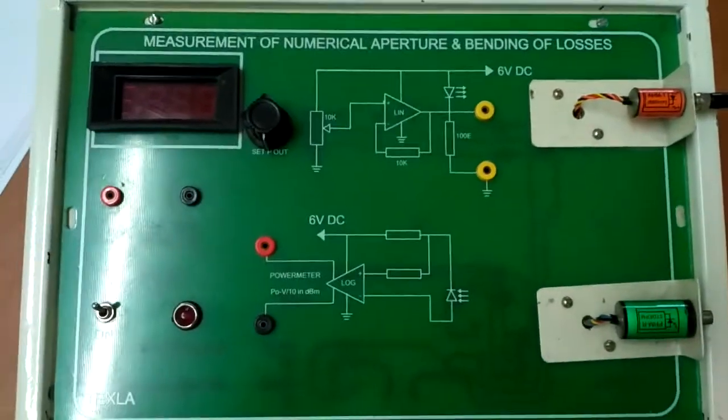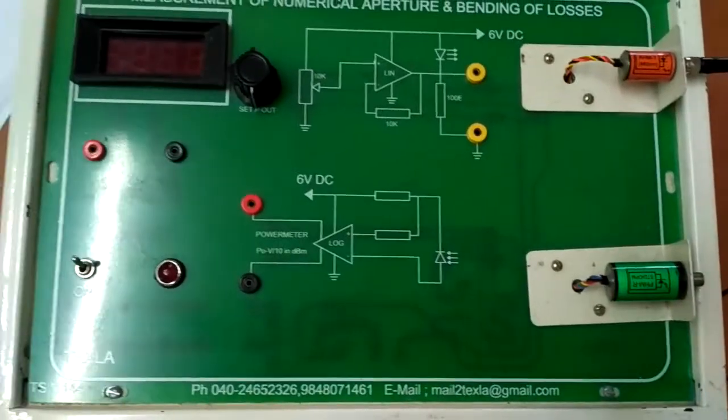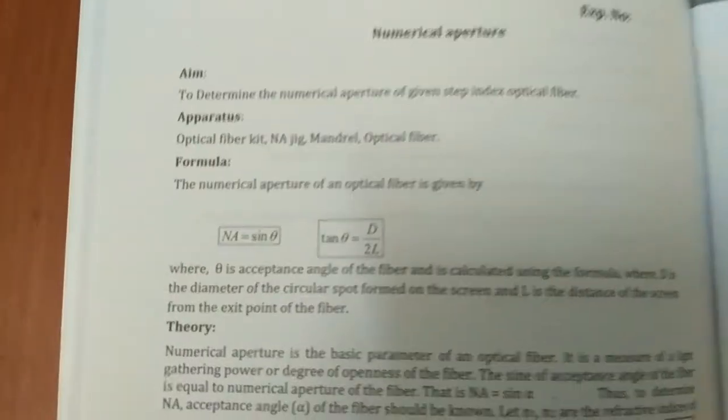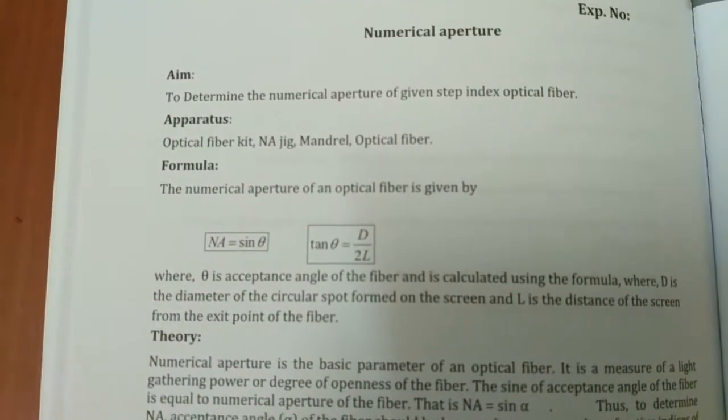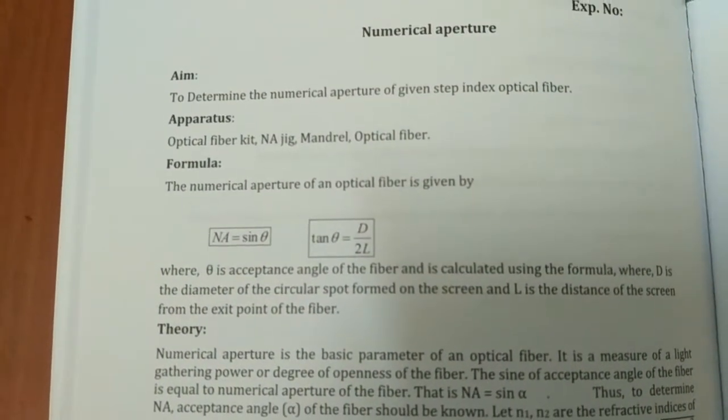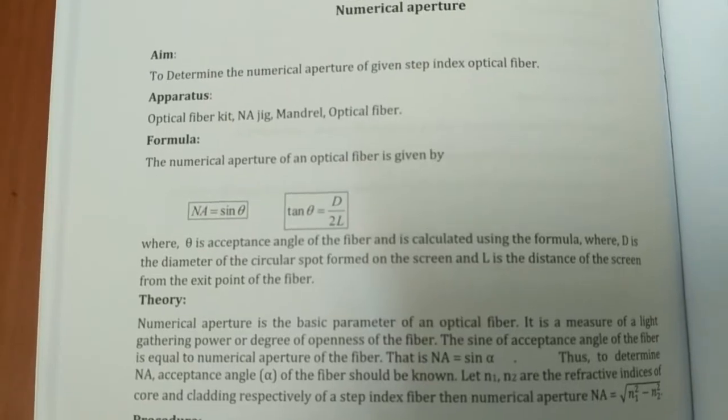We have measurement of numerical aperture. The formula to find the numerical aperture is NA equals sin theta, where we have the tabular column given here.